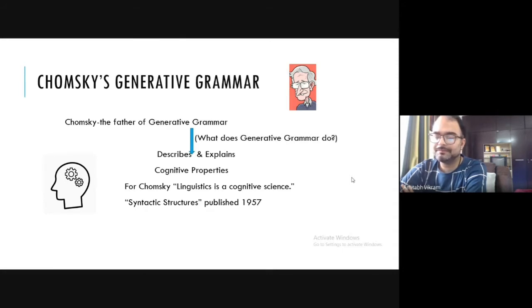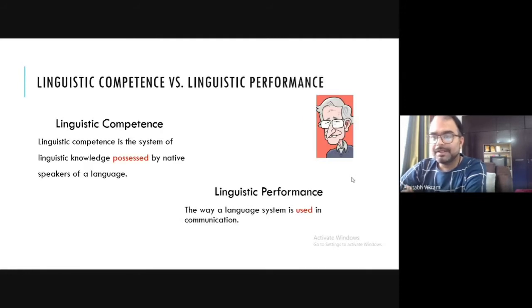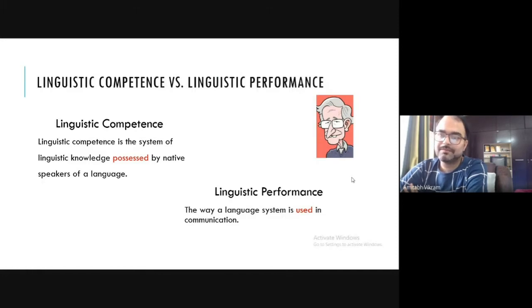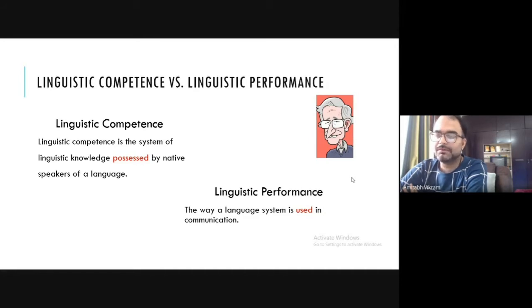Noam Chomsky wrote a book titled Syntactic Structures, published in 1957, in which he posited the concept of generative grammar. In this session we are more concerned about linguistic competence and linguistic performance. The word 'linguistic' functions as a modifier — for competence and for performance — meaning we are concerned with that type of competence and performance related to language.